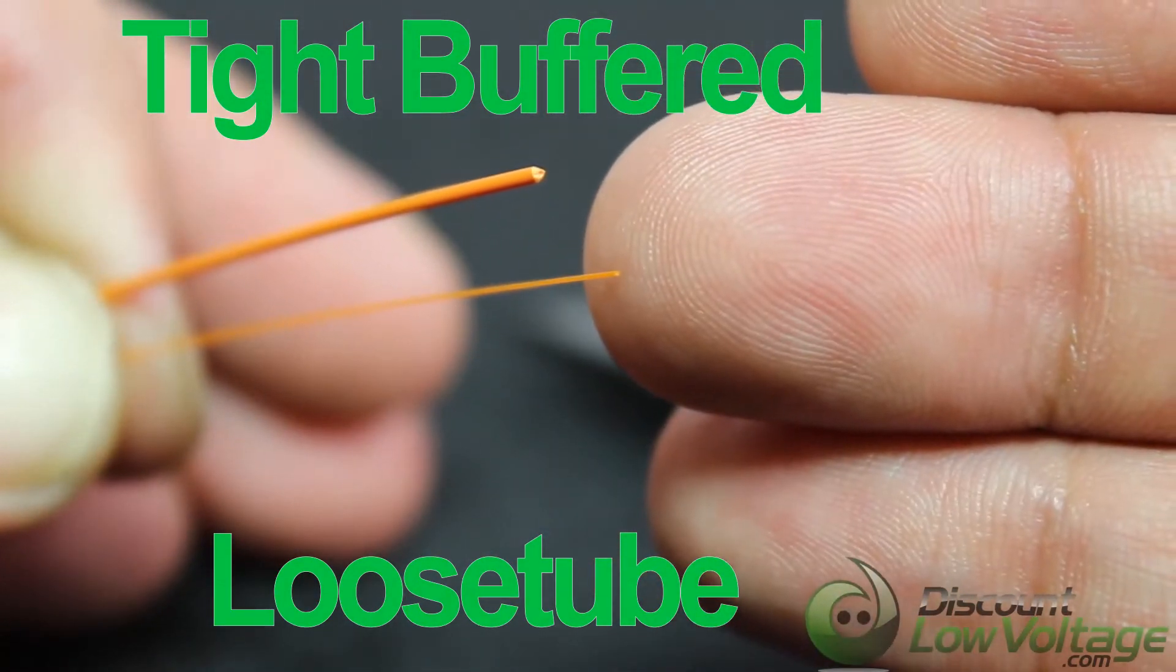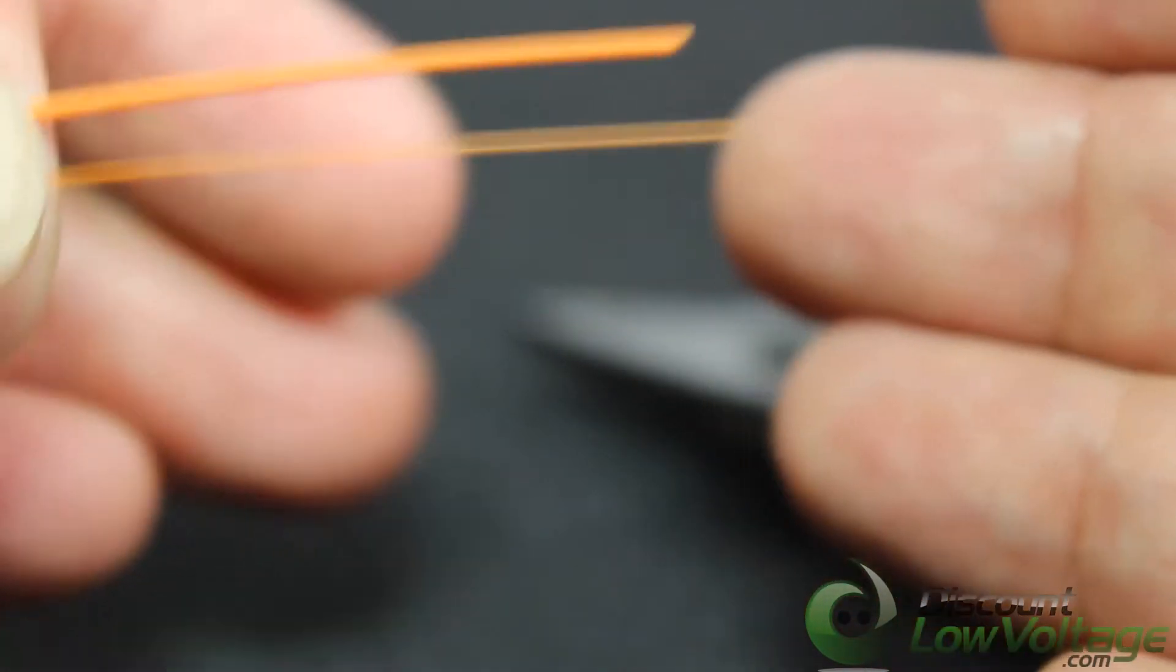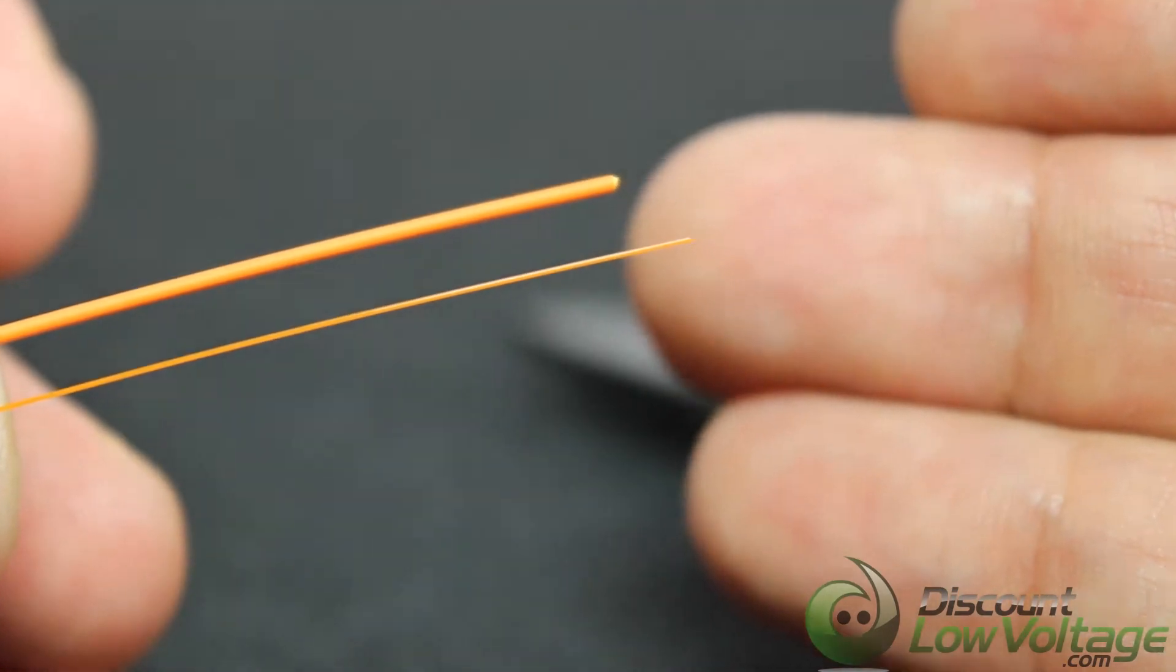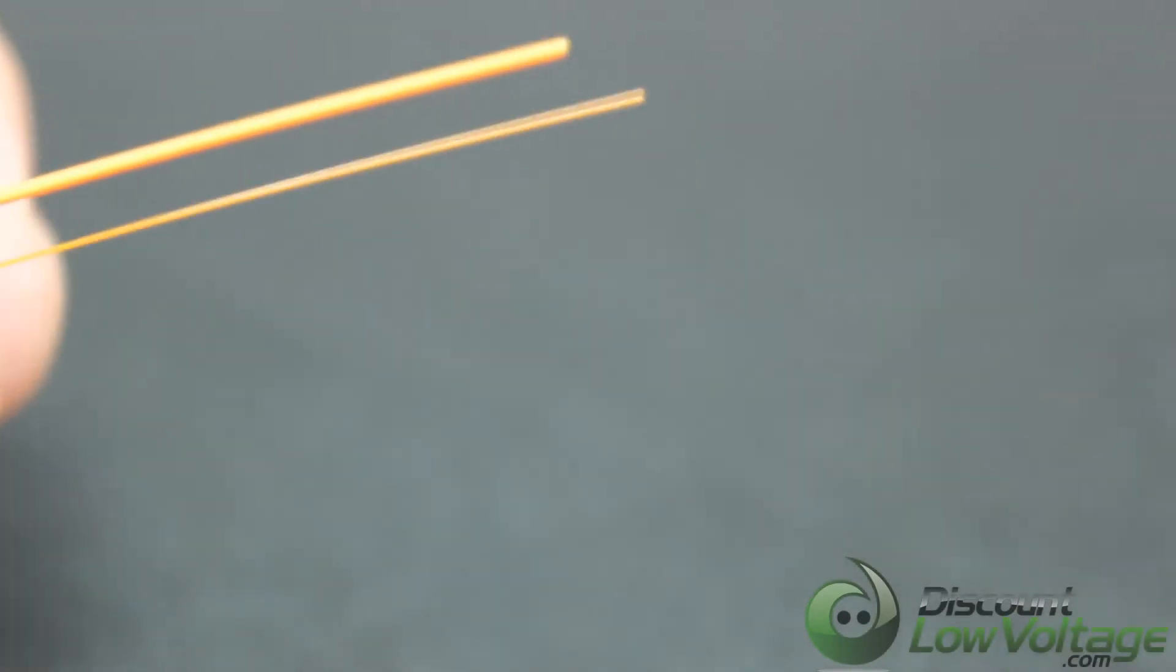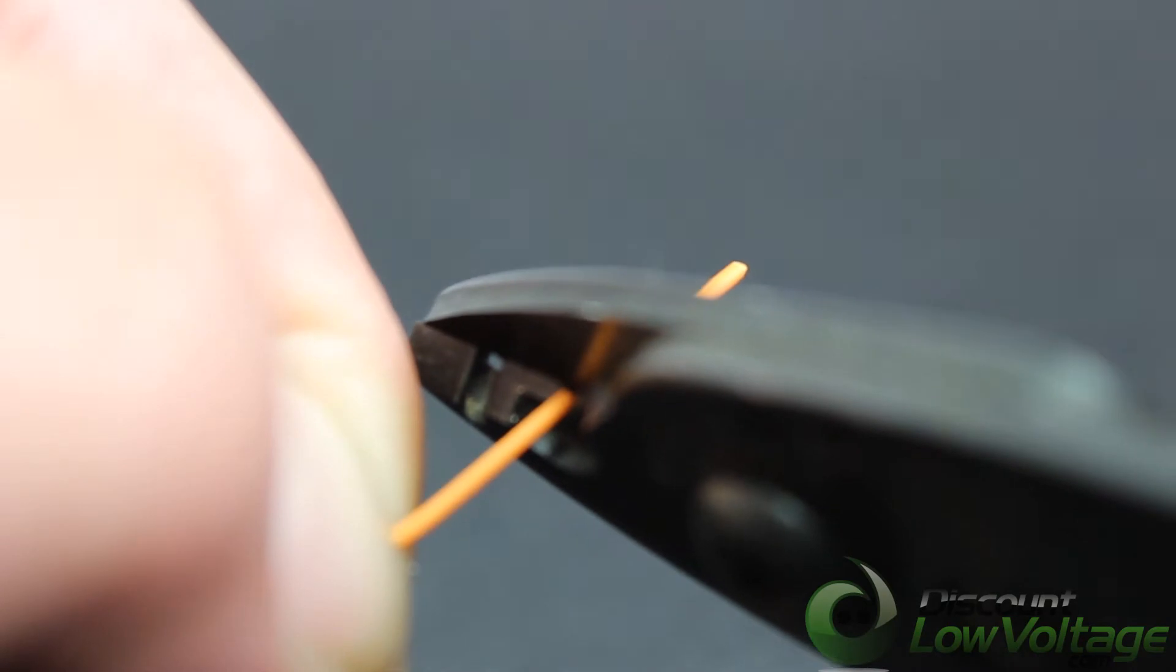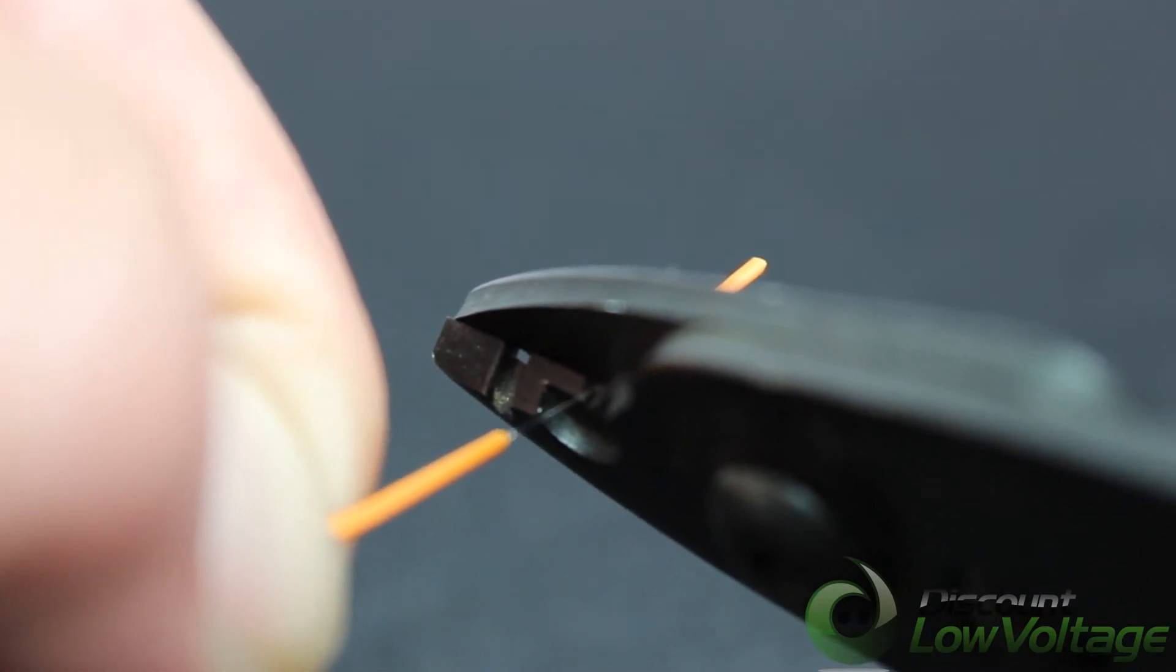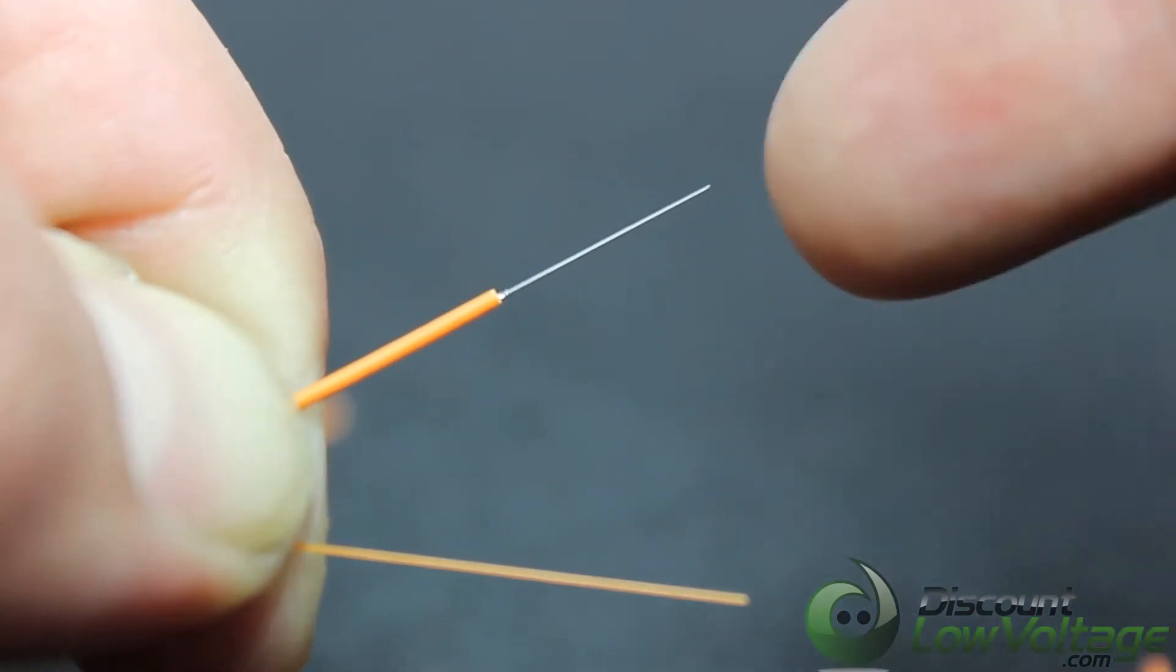So you have your buffer, we're going to strip some off so you can check out the cladding underneath. The cladding underneath is going to be the same 125, but you have your 250 and your 900. Let me see if I can strip a piece off for you. Here we go, so the cladding underneath is the 125.